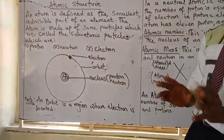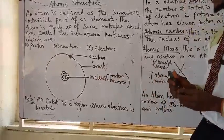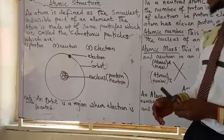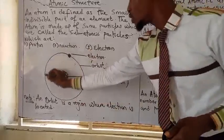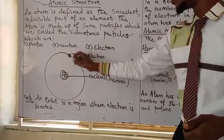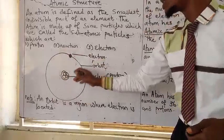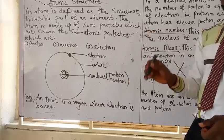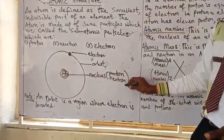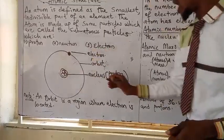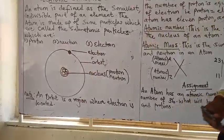The atom is made up of two parts: the orbit and the nucleus. On the orbit of the atom is where the electron is found — the electron revolves on the orbit of the atom. The nucleus is usually found at the center of the atom; it is centrally placed. The nucleus contains the proton and the neutron. The electron is found on the orbit, while the proton and neutron are found inside the nucleus of the atom.